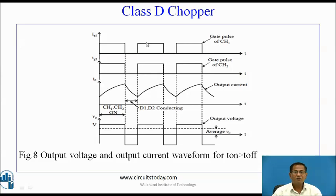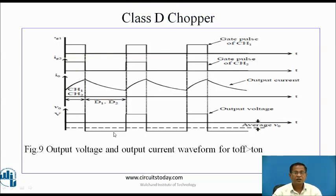These are the waveforms for Class D when on-time is greater than off-time — average load voltage is positive. These are the waveforms when off-time is greater than on-time — average voltage is negative.